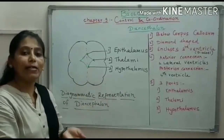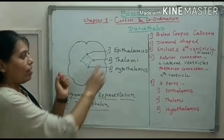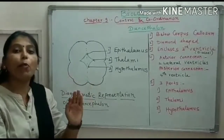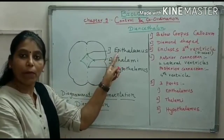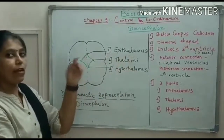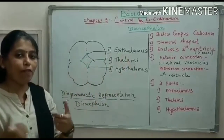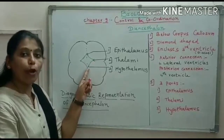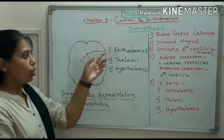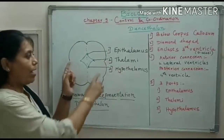Now let us study exactly which parts are present in Diencephalon. Diencephalon is made up of three parts: epithalamus, two thalami, and hypothalamus. Epi means above, so the part present above the thalamus is the epithalamus — like the roof of a room. The lateral walls are called thalami, and the floor is called hypothalamus, because hypo means below. There are two thalami.